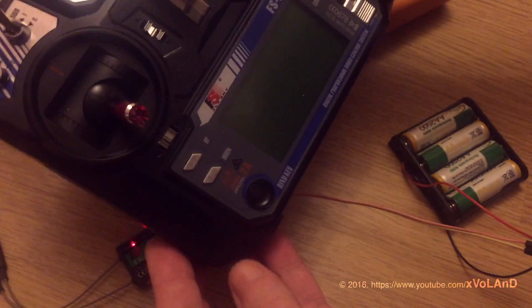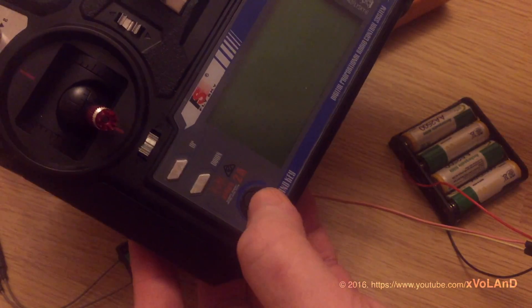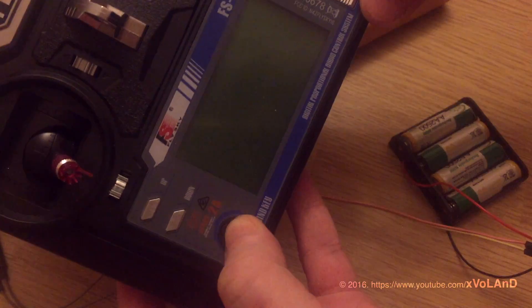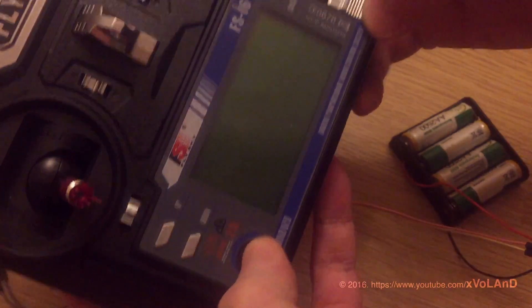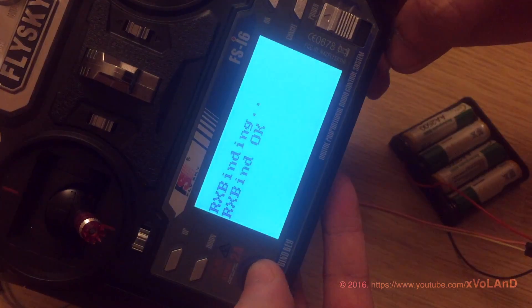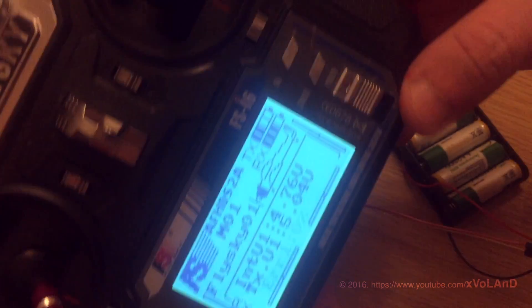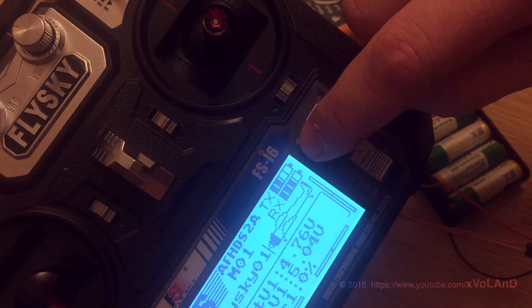And last step, press and hold the lower left button on the transmitter and then switch on the transmitter power. The LED will stop flashing. The receiver is now bound to the transmitter.